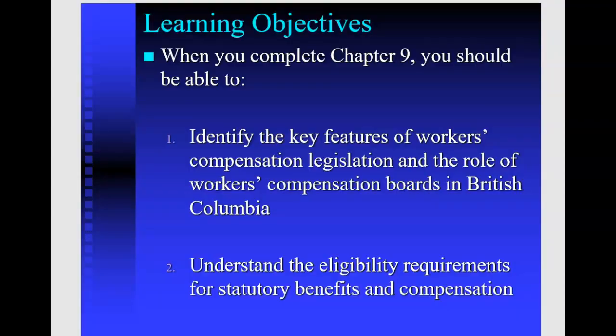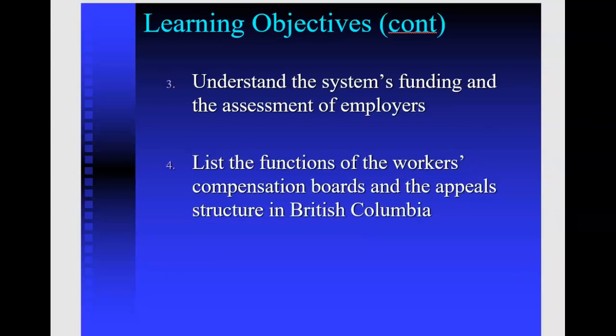The main objectives for this chapter are: to identify the key features of workers compensation legislation, to understand the role of the Workers Compensation Board in BC, to understand the eligibility requirements for statutory benefits and compensation when an accident, injury, or illness takes place, to understand the system's funding and assessment of employers, and to look at some functions of the board and the appeal structure in BC.